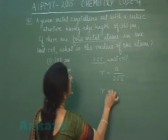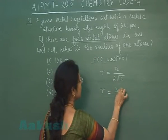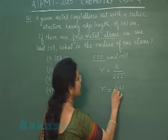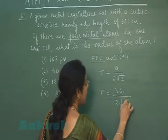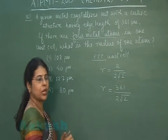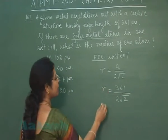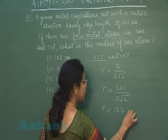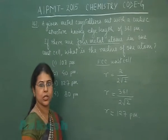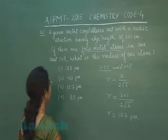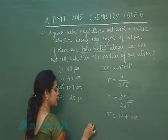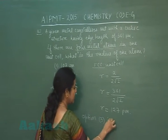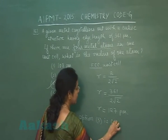The edge length is given as 361 picometers and we need to find the radius. Substituting the values into the formula, the answer comes out to 127 picometers. So the third option is the correct answer.